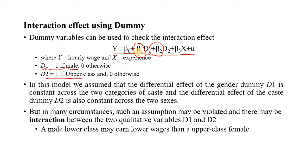When we interpret the caste dummy, we say that if there are no gender differences, this is the average difference in the wage rate between the two castes — upper caste and lower caste. However, this assumption may not be valid in reality, because sometimes there may be an interaction between two qualitative variables.